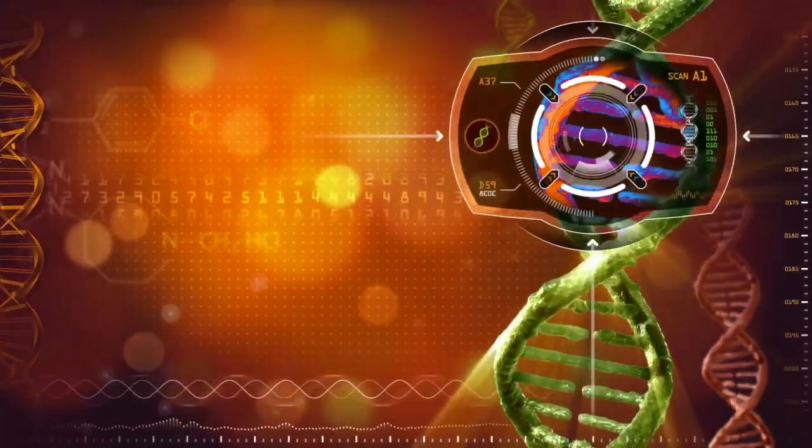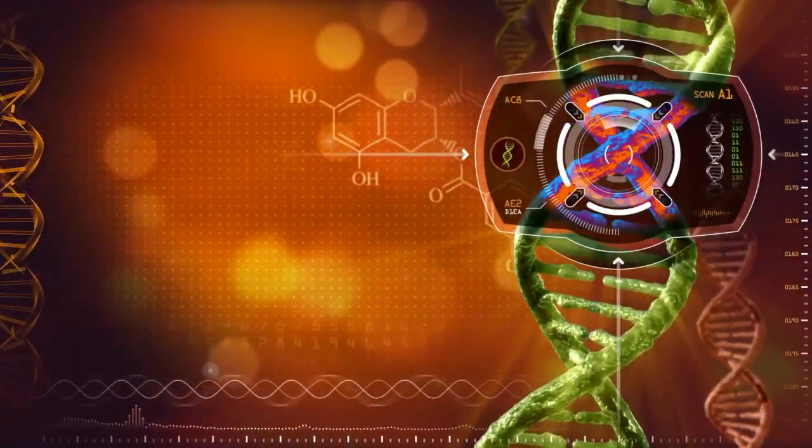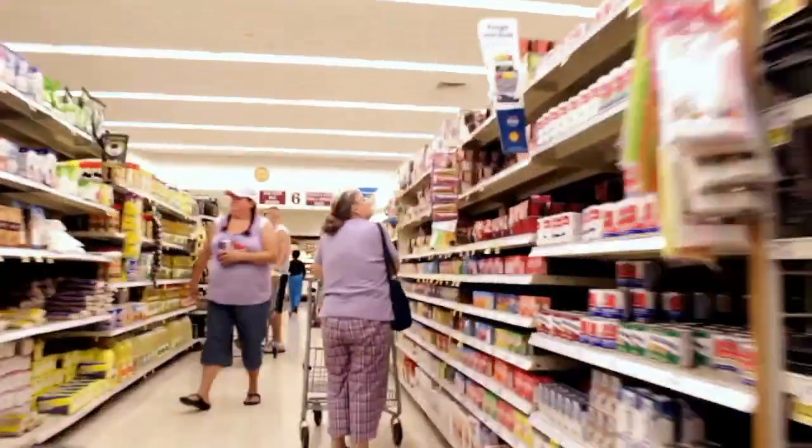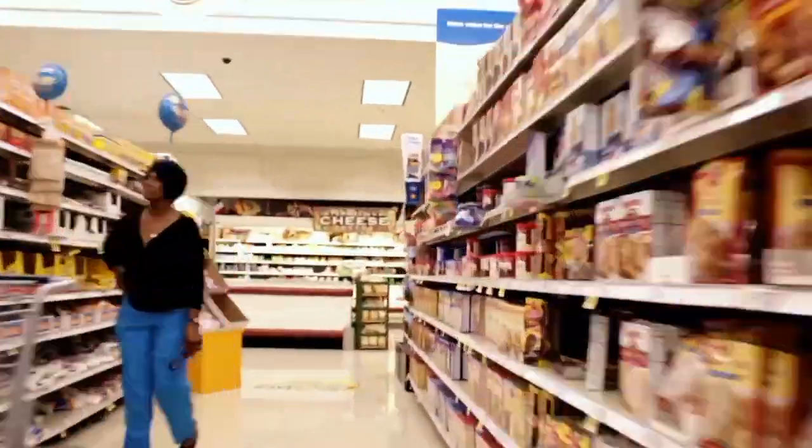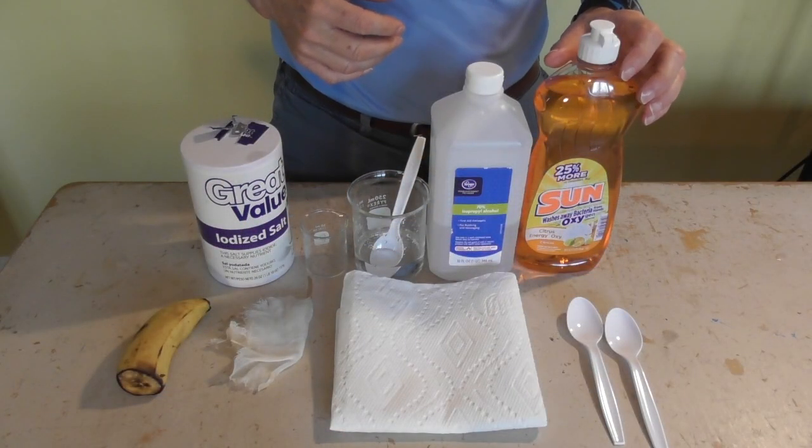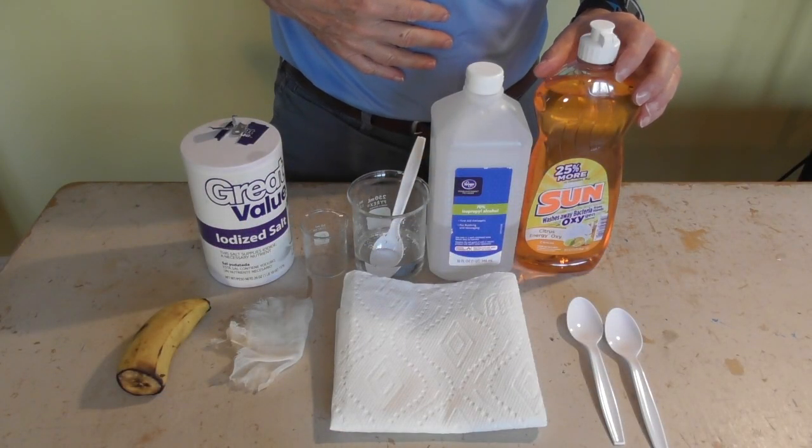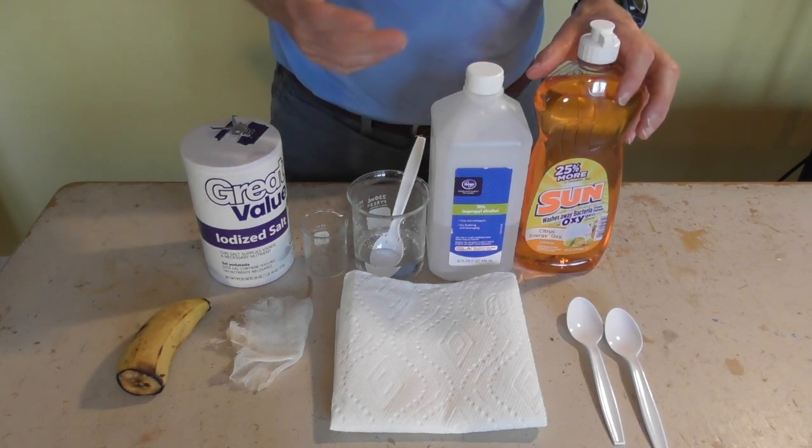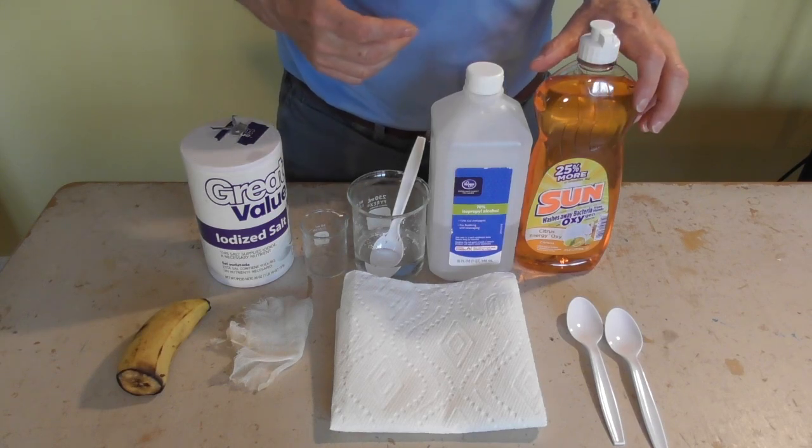In this lab activity, you will be able to use ingredients that you can find at any grocery store and extract DNA from a banana. Let's get started and extract some DNA out of a banana. So let's go through what you need. The nice thing about this is everything is available at your local grocery store.